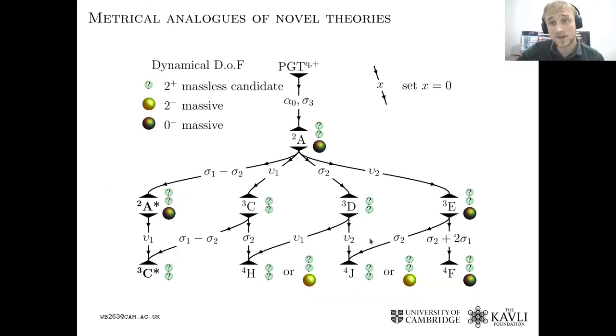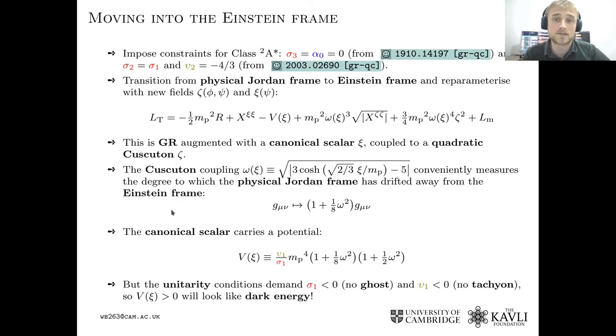So now let's return to the novel theories. We spent a while talking about class 3c and its replication of GR up to optional dark radiation component. Let's pick a more general theory, which is class 2a. It also has the two massless degrees of freedom, which we could possibly associate with the graviton, which we know exists in nature. We also have a pseudoscalar, a massive particle. Now, we want to move the metrical analog of this theory into the Einstein frame, because it's just easier to work with. So we do the conformal transformation, and we re-parameterize the fields into z and zeta to make this a little bit easier to read.